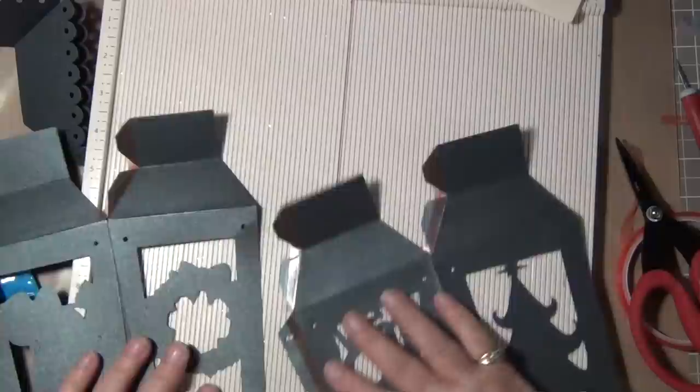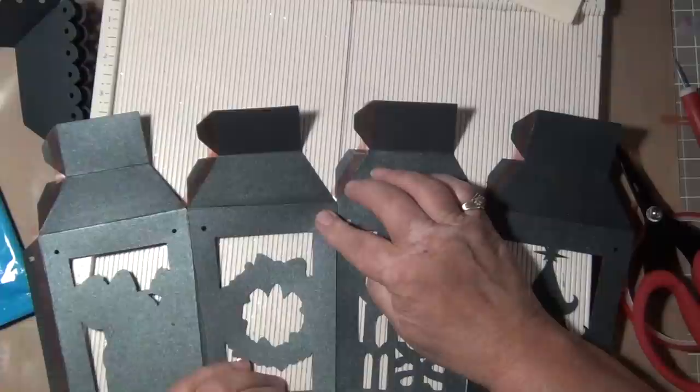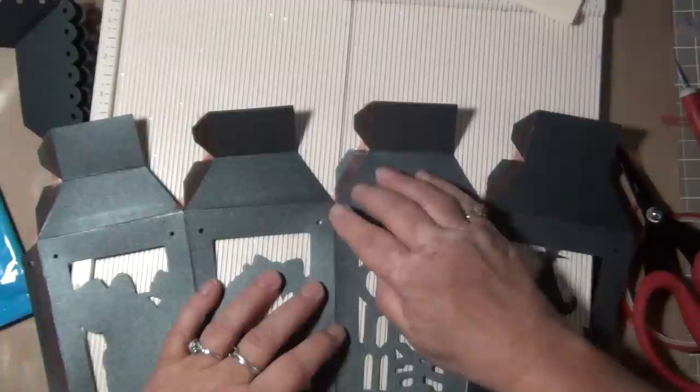The next thing you are going to do is align the holes on the flap of the Merry Christmas side to the right hand holes on the front of the wreath side.